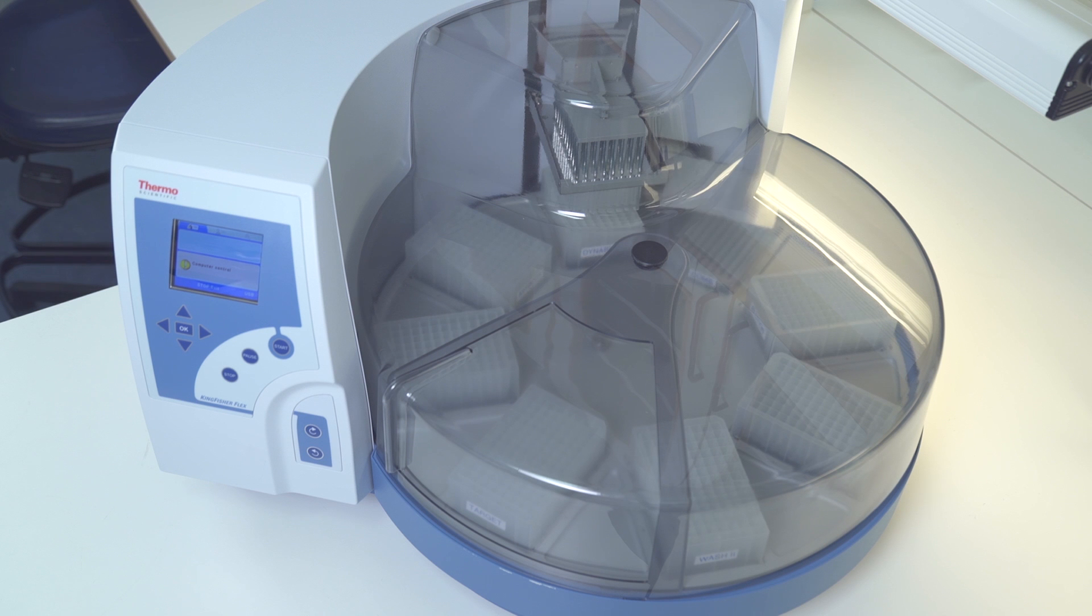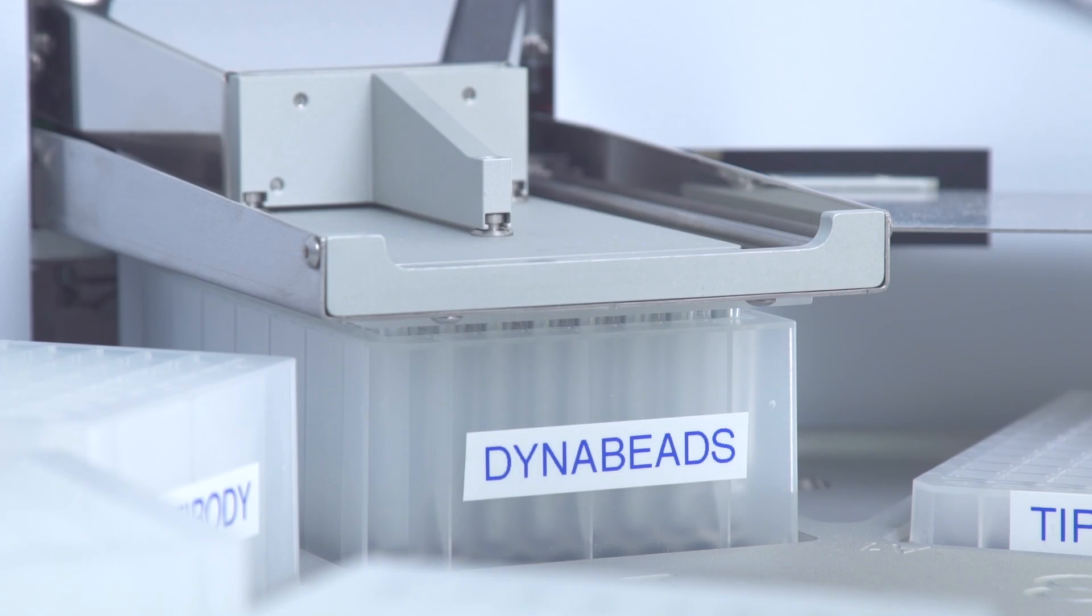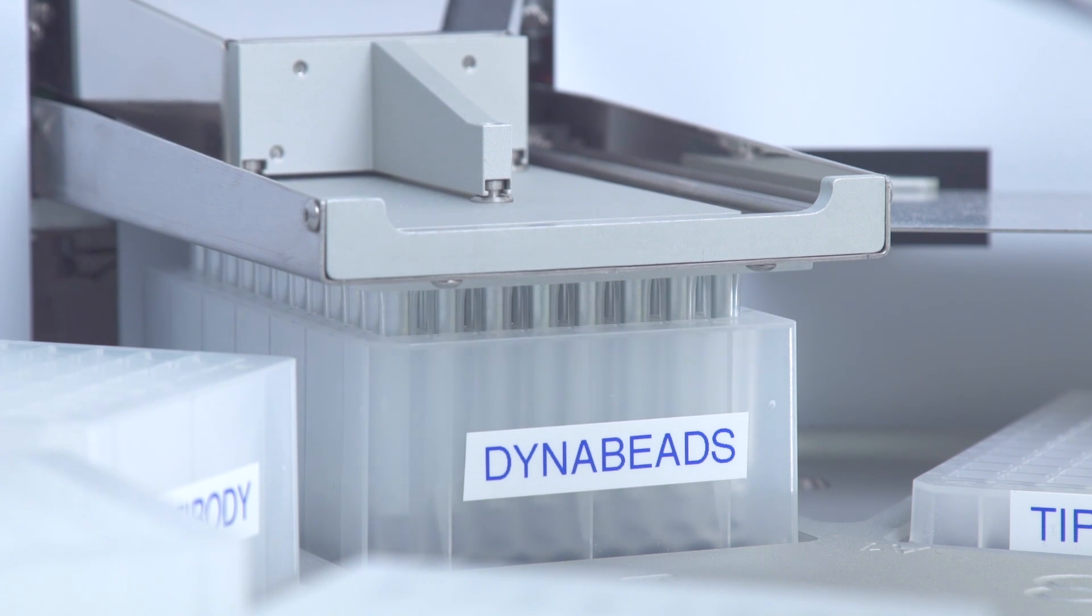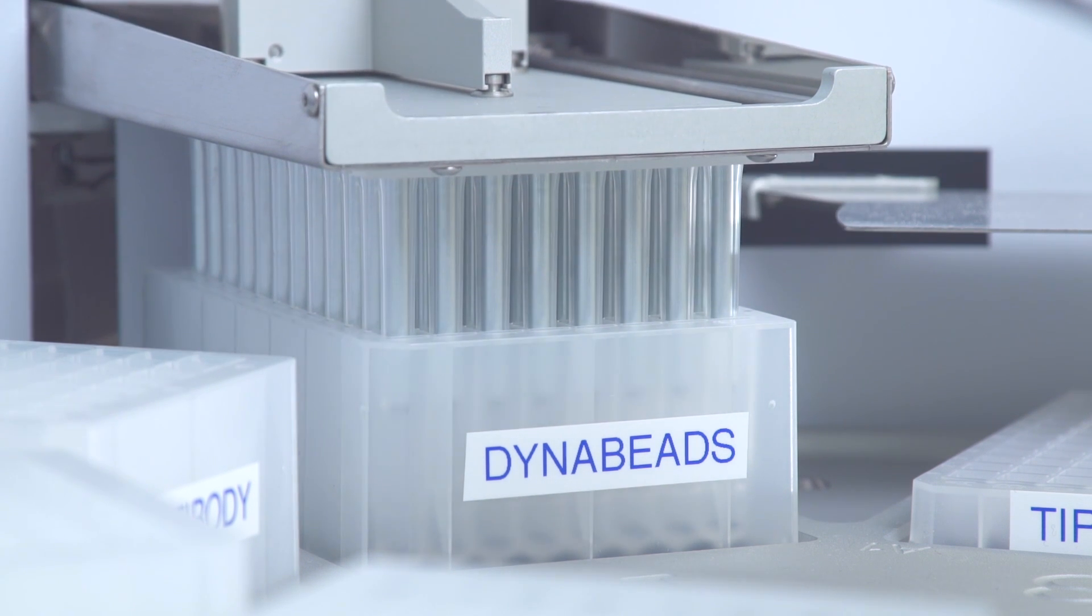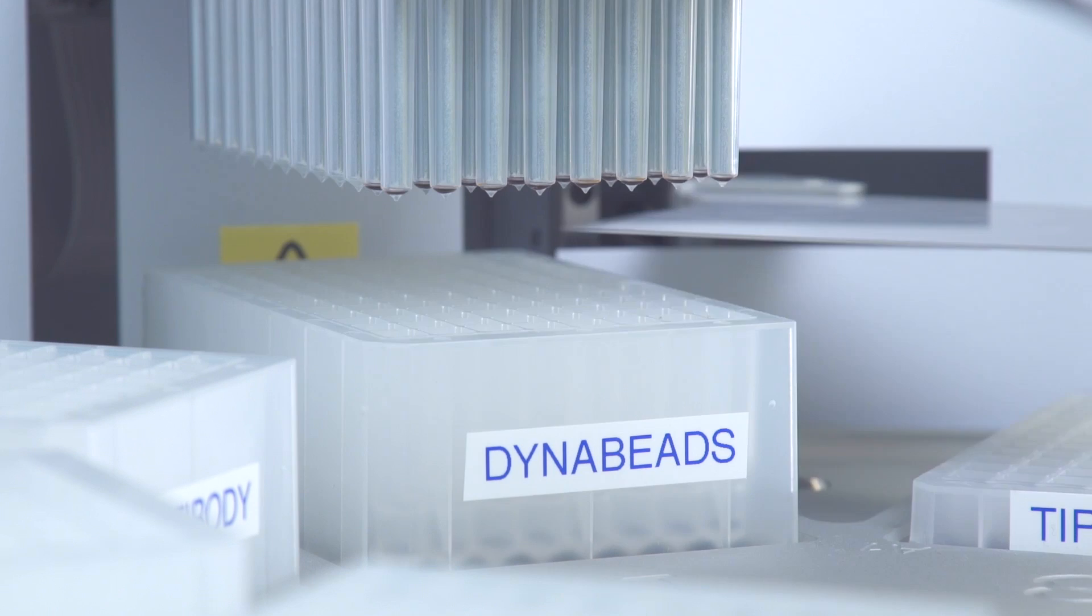In this video, we show the benefits of the Kingfisher Flex instrument using Invitrogen DynaBeads magnetic beads, performing an automated reproducible immunoprecipitation in only 40 minutes.